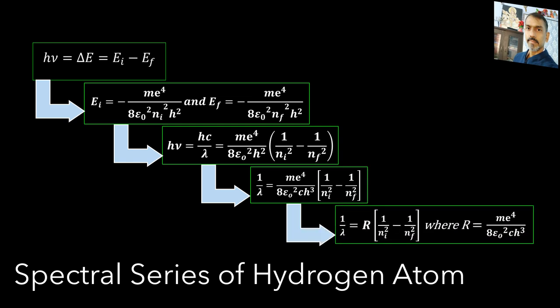Me to the power 4 by 8 epsilon naught square ch cube is constant and known as Rydberg constant. On inserting the values of various constants, we get Rydberg constant equal to 1.03 into 10 to the power 7 per meter. This is a value very close to the value 1.097 into 10 to the power 7 per meter obtained from the empirical Balmer formula. This agreement between the theoretical and experimental values of the Rydberg constant provided a direct and striking confirmation of the Bohr's model.